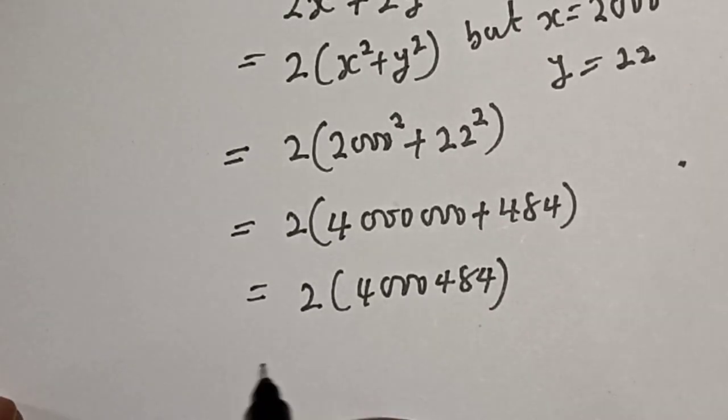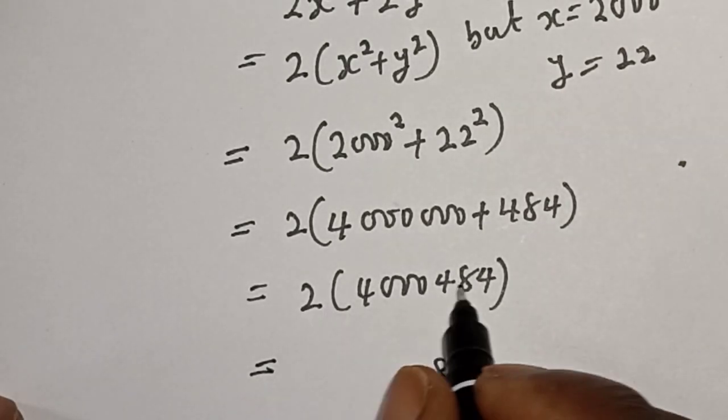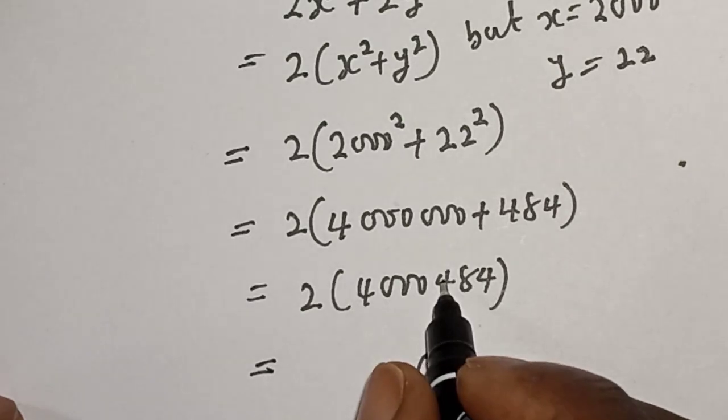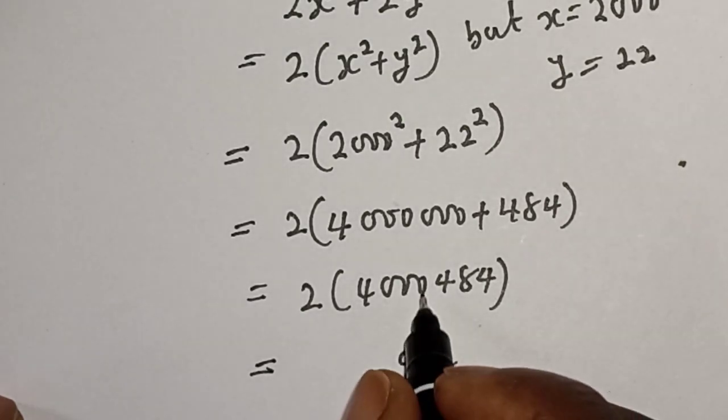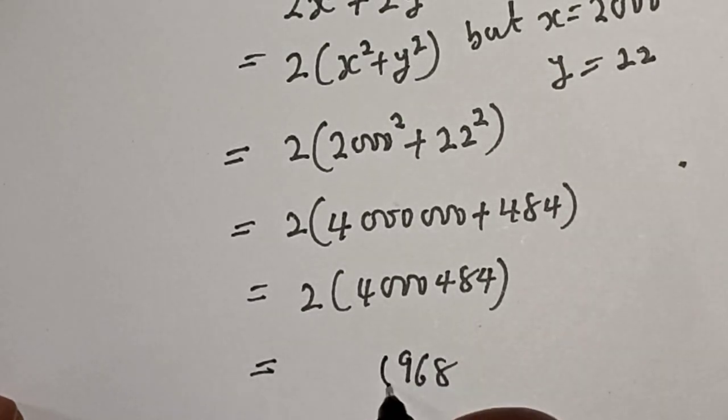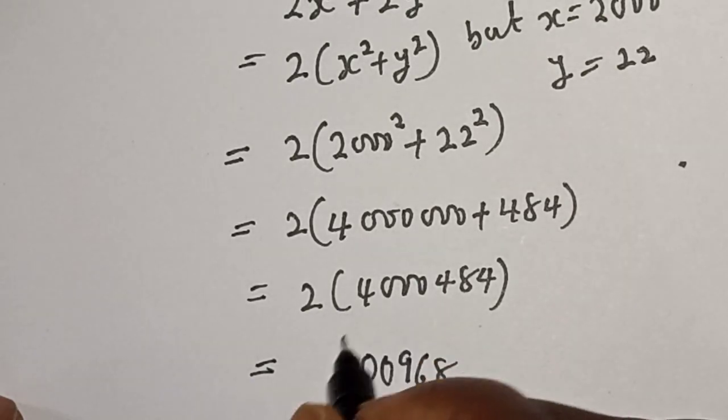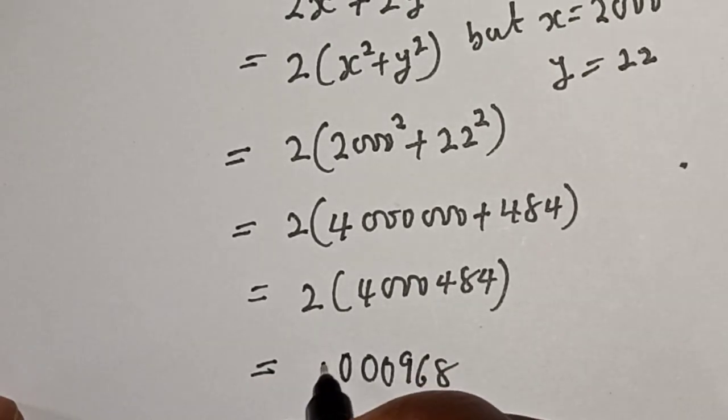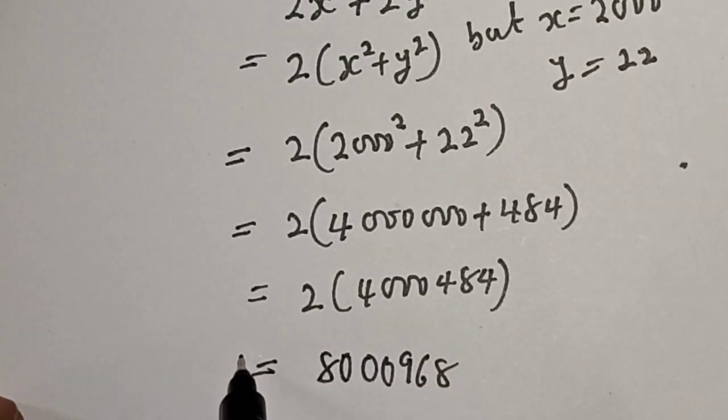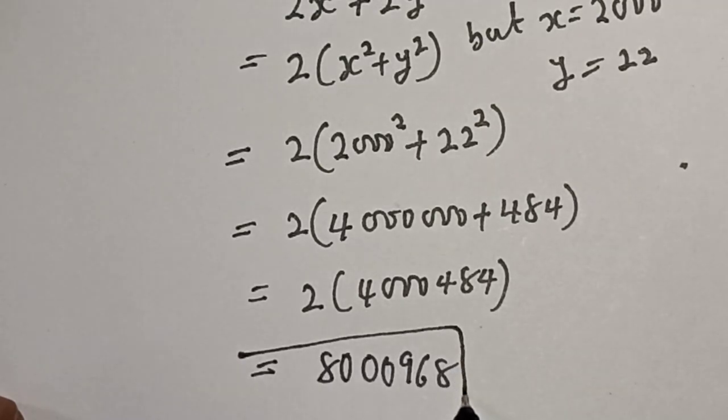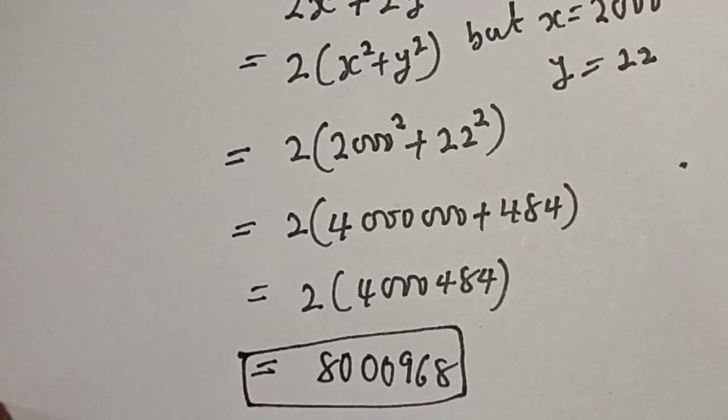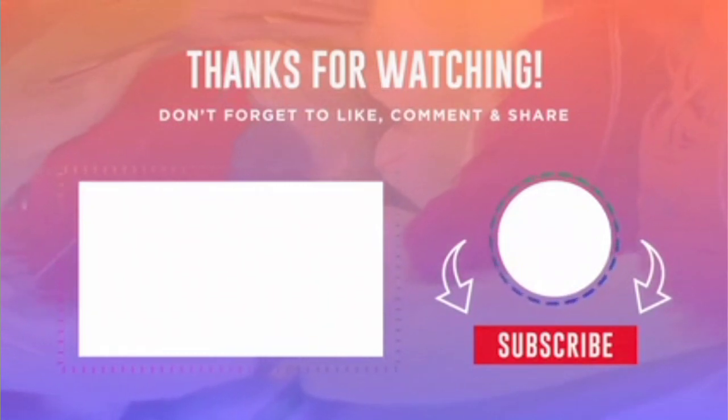Now let's multiply out by 2. This is equal to 8,000,968. This is the final answer. If you enjoyed the class, please don't forget to like, share, comment and subscribe. Thank you.